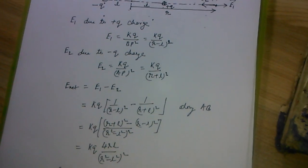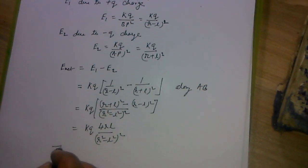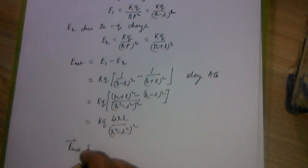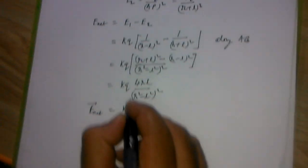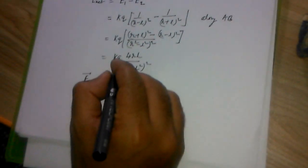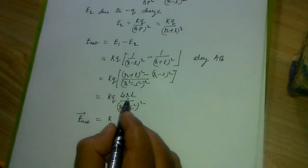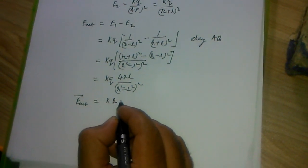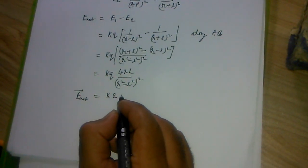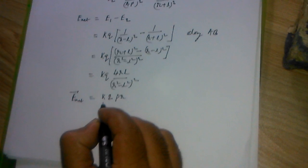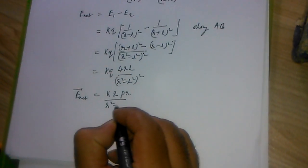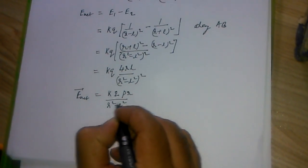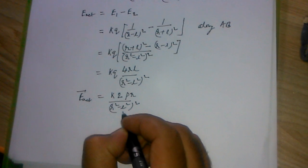This net electric field can be rewritten using the dipole moment. Since dipole moment P equals Q times 2L, we have 2QL = 2P. So E_net equals 2KPR divided by (R² minus L²) whole square.